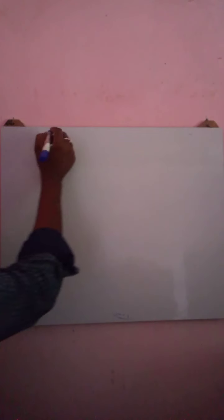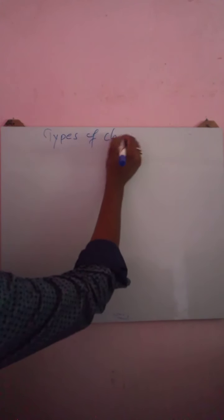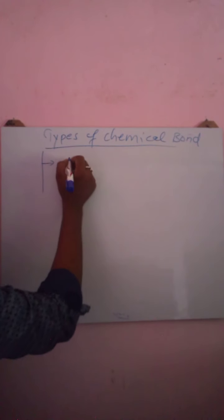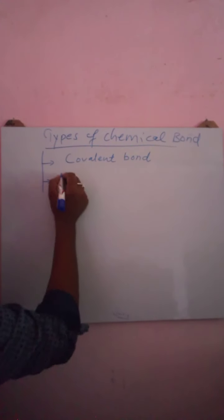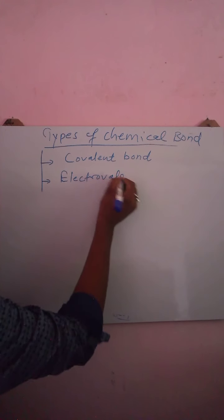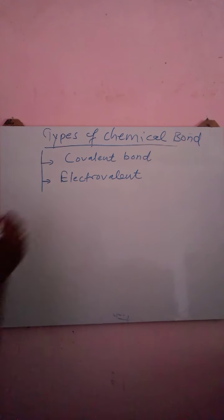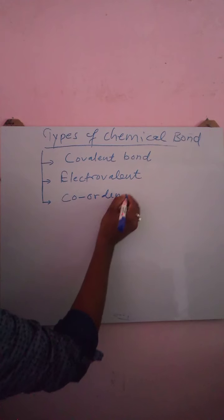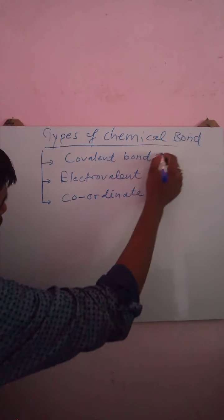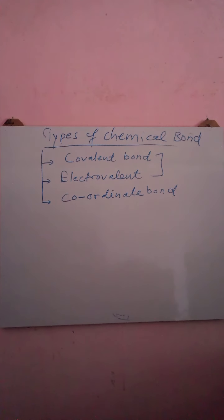Now we will understand how many types of chemical bonds there are. Types of chemical bond include: first, covalent bond, also known as molecular bond; second, electrovalent bond, also known as ionic bond; and third, we will also briefly try to understand coordinate bond. The covalent bond and electrovalent bond are the main parts of your syllabus, and we will also briefly learn about coordinate bond.